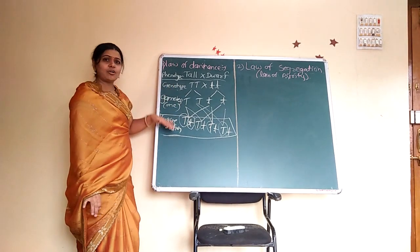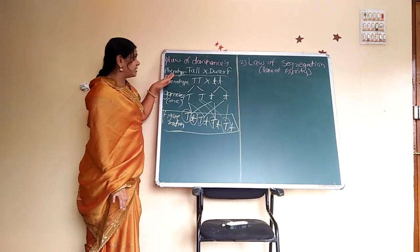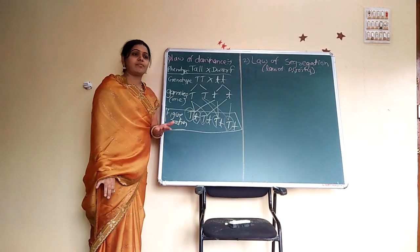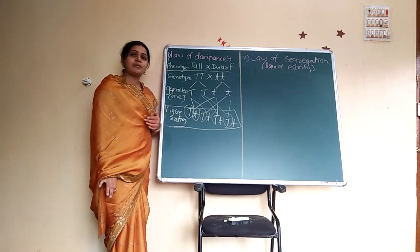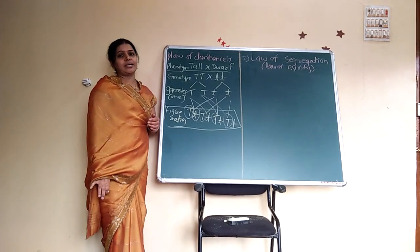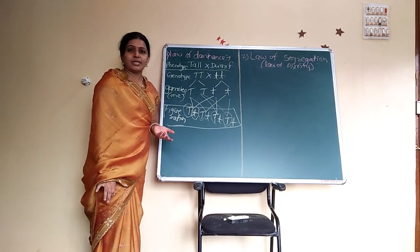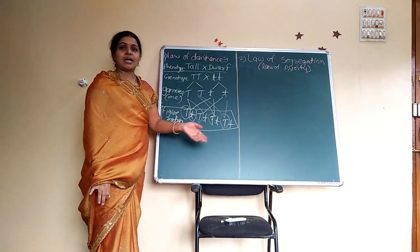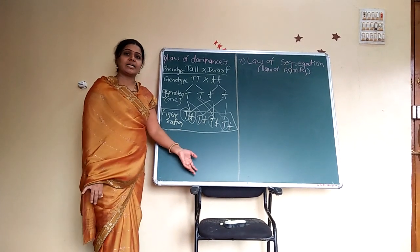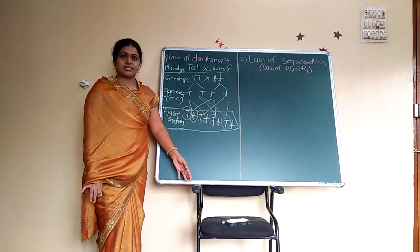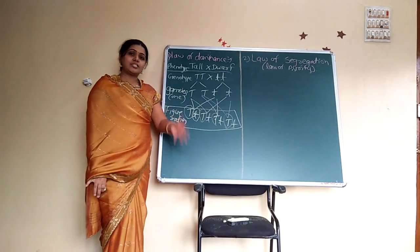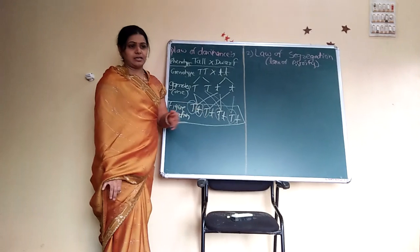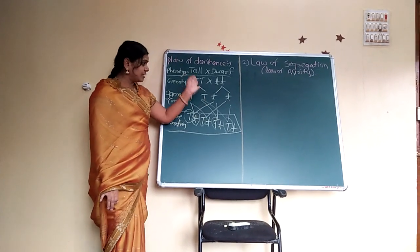Another example of the law of dominance in human beings: curly hair is dominant over straight hair. And another example in human beings is that brown eye color is always dominant over green eye color or blue eye color.